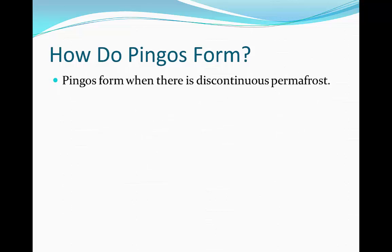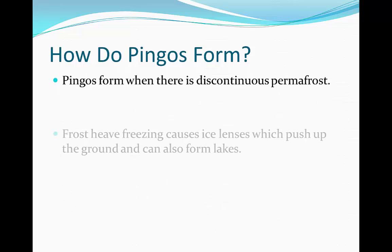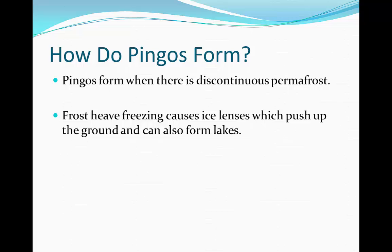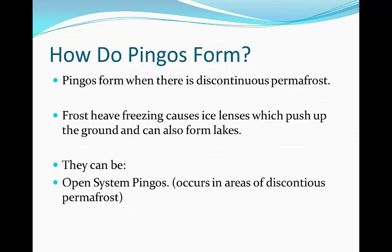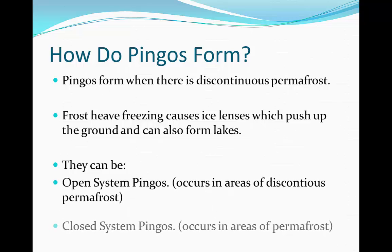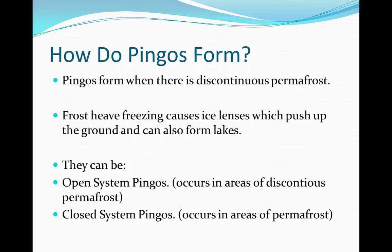Pingoes form when there's discontinuous permafrost in the ground. Frost heave freezing causes ice lenses which push up the ground, and these can also form lakes. They can be either open system pingoes, which happen in areas of discontinuous permafrost, or closed system pingoes, which happen in areas of complete permafrost.